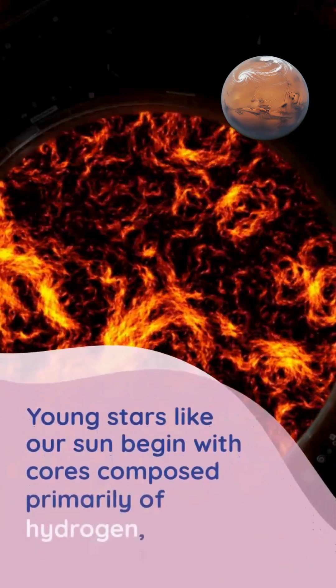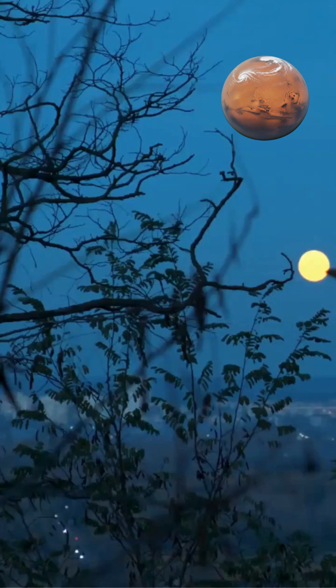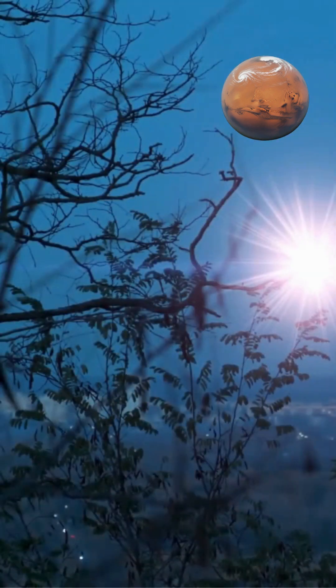Young stars like our Sun begin with cores composed primarily of hydrogen, while aging and massive stars develop cores containing progressively heavier elements through nuclear fusion.